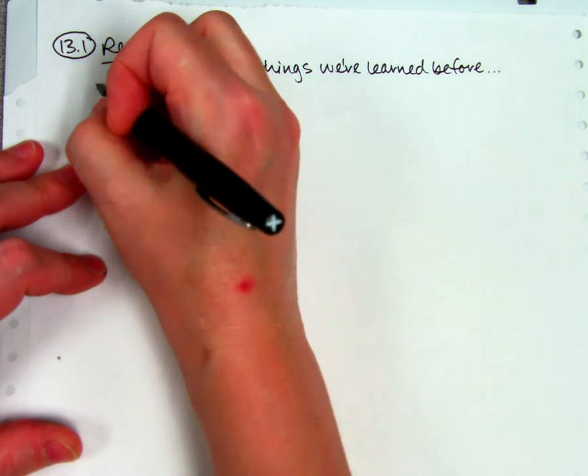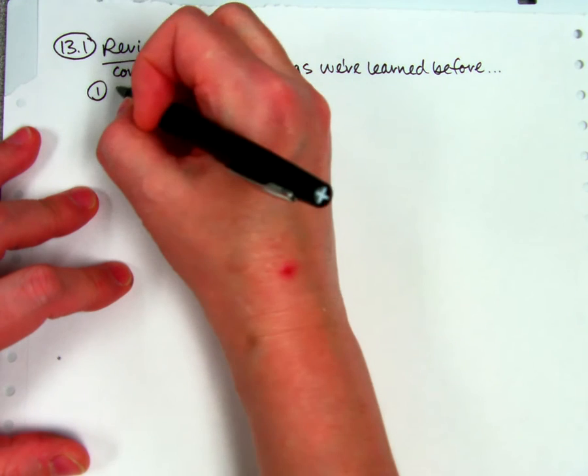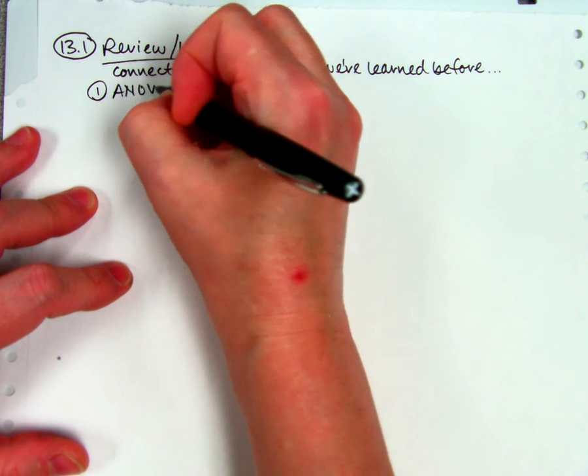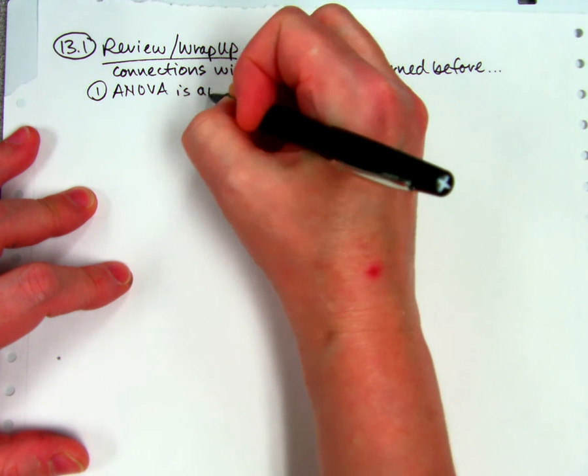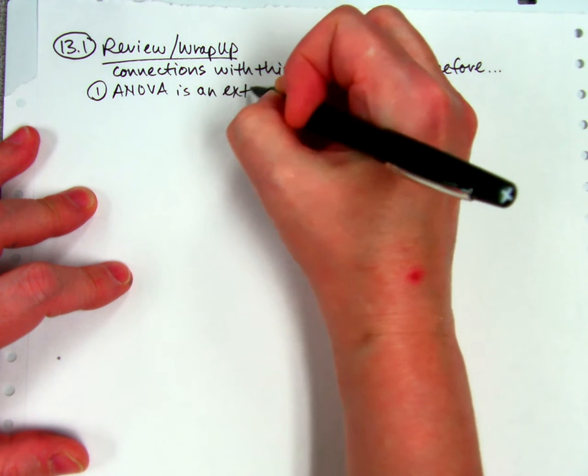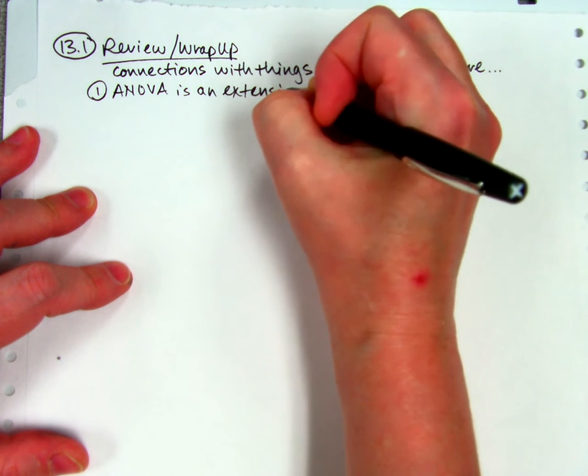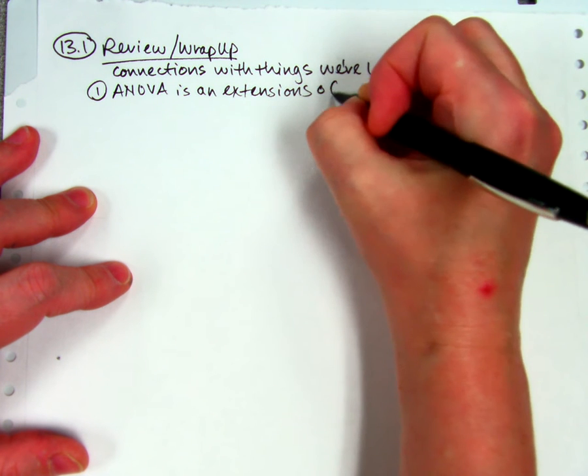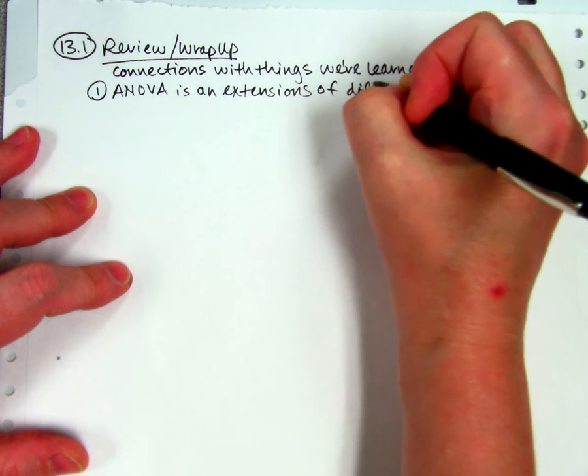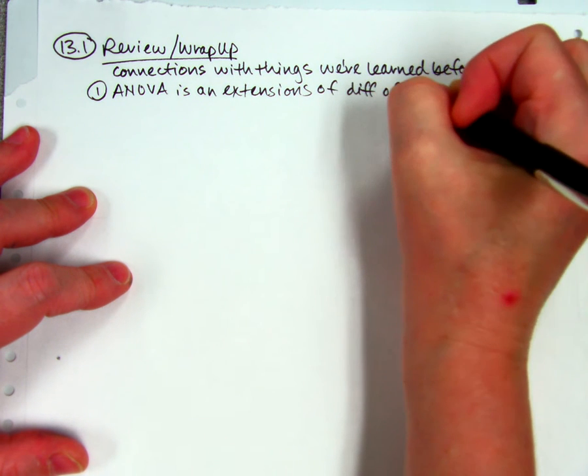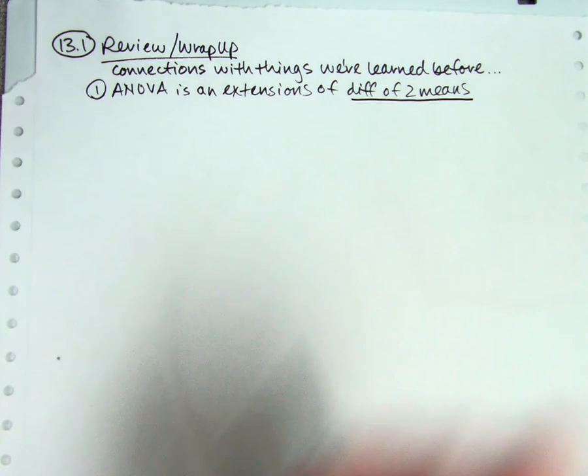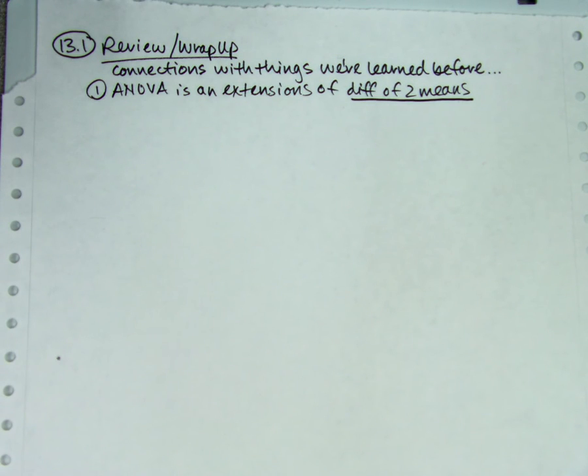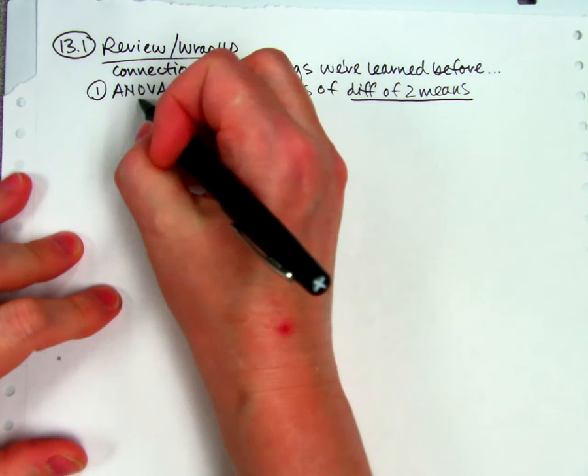So the first thing that I want to talk about is that ANOVA is an extension of something that we've done before. It's an extension of difference between two means tests. Difference between two means we did in chapter 10 where we did mu1 equals mu2 as our null. And what we're doing is we're adding more. So ANOVA has more than two means.